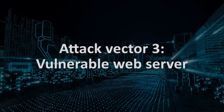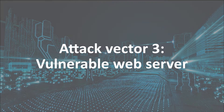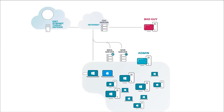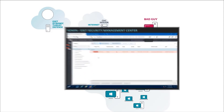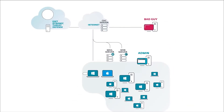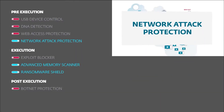All the intrusion attempts would have been blocked by the various detection layers, but let's say the attacker discovered that the target company's web server is vulnerable and makes another attempt to compromise the network this way. The attempt to exploit that web server vulnerability is detected by ESET network attack protection. By the way, this was the layer that successfully protected ESET users from the WannaCry and NotPetya outbreaks.